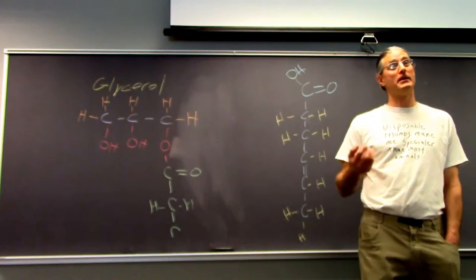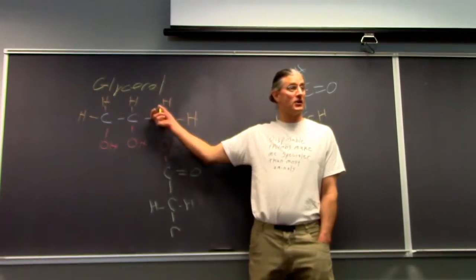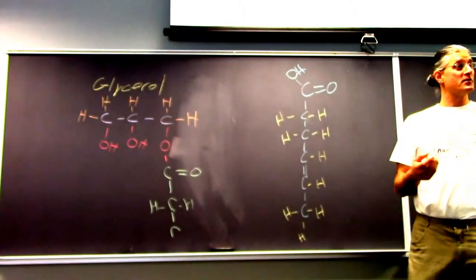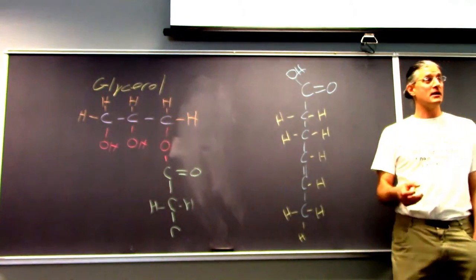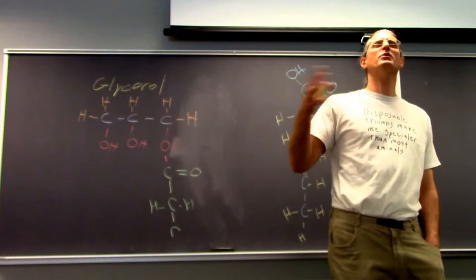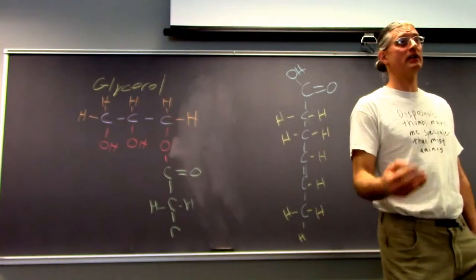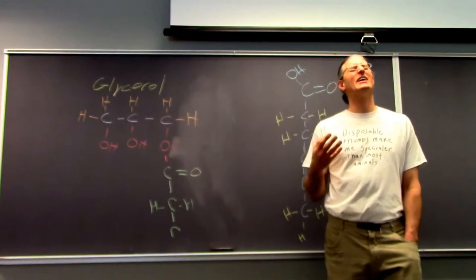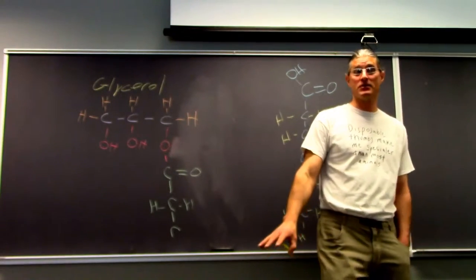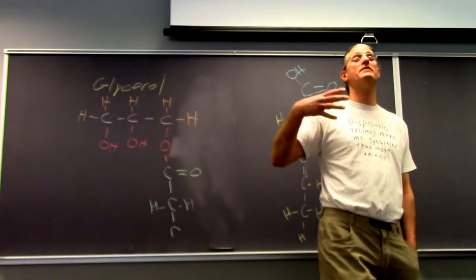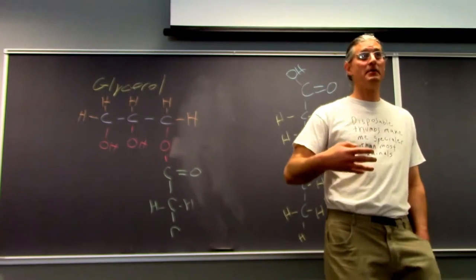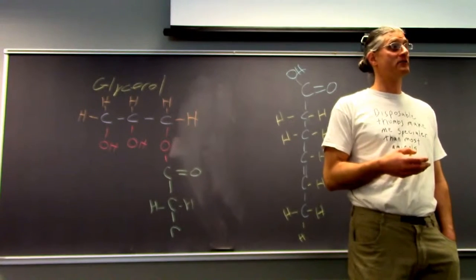The fats stored in our adipose cells, in our adipose tissue, are basically glycerol plus three fatty acids. The fatty acids can vary in how long they are and in their degree of unsaturation — the number of double bonds. The shorter and more double bonds, the more liquid they are. The longer and less double bonds — the more saturated — the less liquid. The fats from mammals, because they are warm-blooded, tend to be saturated fatty acids.